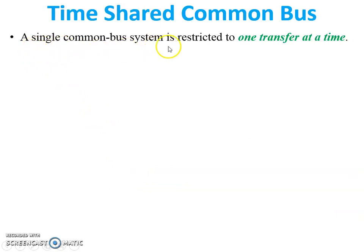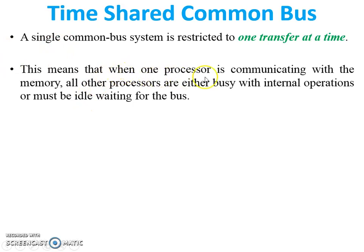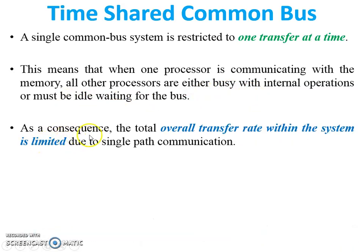A single common bus system is restricted to one transfer at a time, so at a time only one CPU or one processor can transfer data with the memory unit. This means that when one processor is communicating with the memory, the rest of the processors will either be busy with their internal operations or must be idle waiting for the bus. As a consequence, the total overall transfer rate within the system is limited due to single path communication. This is the key limitation of the single bus system.